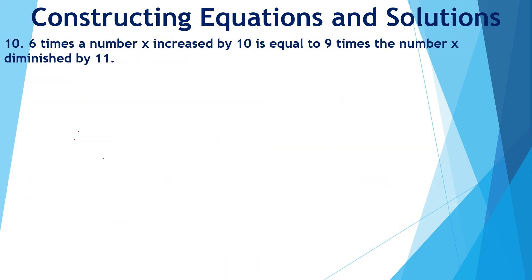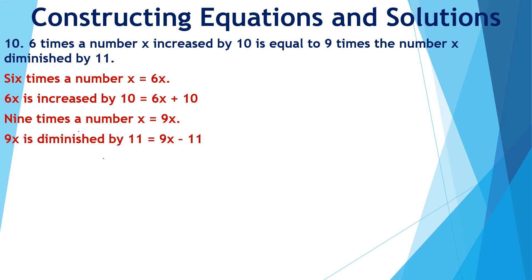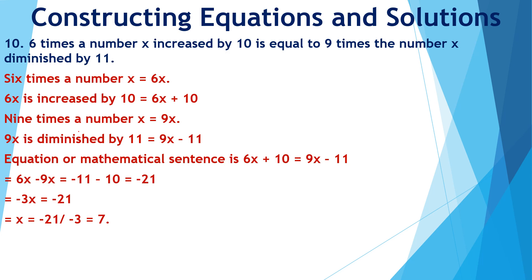6 times the number x increased by 10 is equal to 9 times the number x diminished by 11. 6 times the number x is 6x, and 6x increased by 10 is 6x plus 10. 9 times the number x is 9x, diminished by 11 gives 9x minus 11. Equating the two: 6x plus 10 equals 9x minus 11. On solving, we get minus 3x equal to minus 21, or x equal to 7. So the required number is 7.